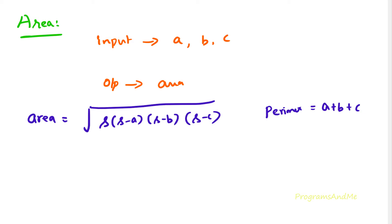To find out the perimeter we use a plus b plus c, and to find out the semi-perimeter or half the perimeter we use (a plus b plus c) divided by 2. So s is nothing but (a plus b plus c) divided by 2. This is the formula to find out the area of a triangle when the length of three sides is given.